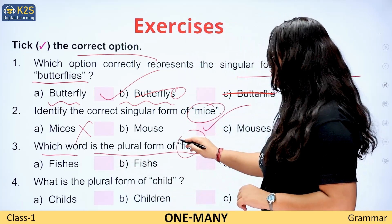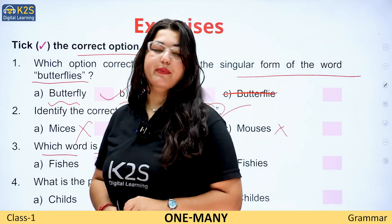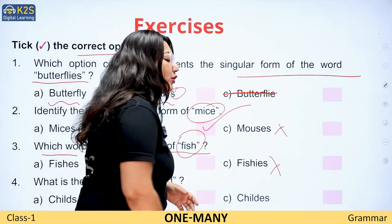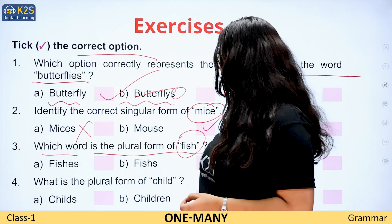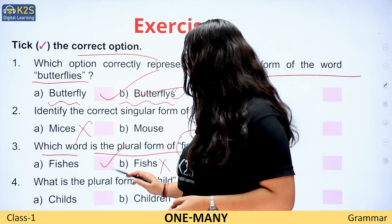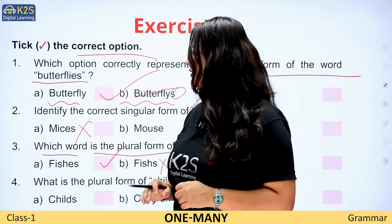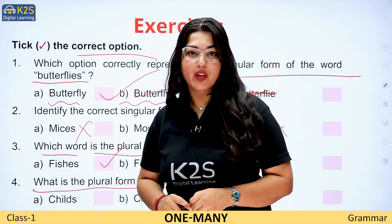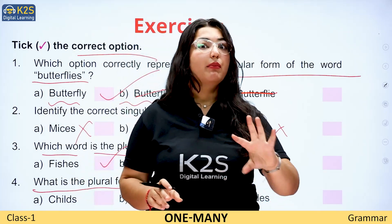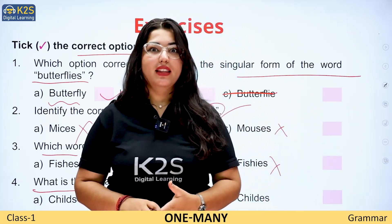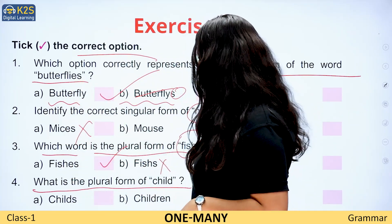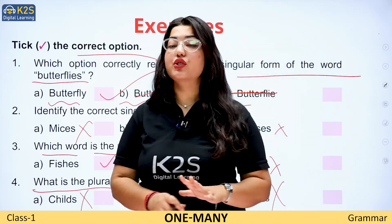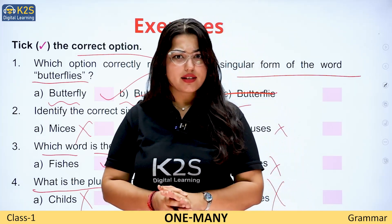Which word is the plural form of fish? Fishes — the right answer is F-I-S-H-E-S, fishes. What is the plural form of child? If it is one child, then it is child. But if it is more than one, then it is children. Exactly, the right answer is children. Childs is not correct — the right answer is children.